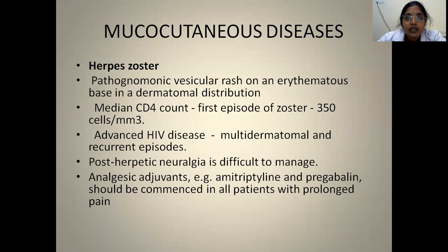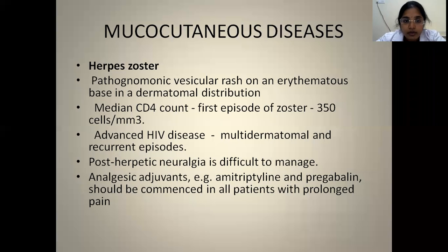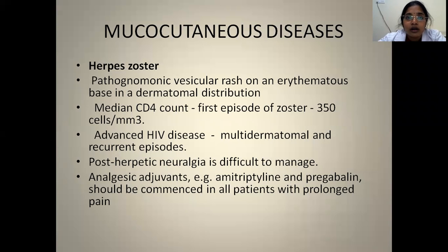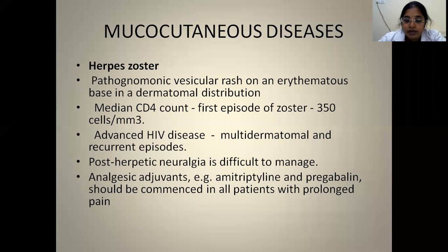Herpes zoster: pathognomically, a vesicular rash is found in a dermatomal distribution. In advanced cases, multiple dermatomal involvement is seen. The first episode of herpes zoster usually occurs when counts drop below 350. Post-herpetic neuralgia is common and pain control is tough. Analgesics, amitriptyline, and pregabalin are given for this.